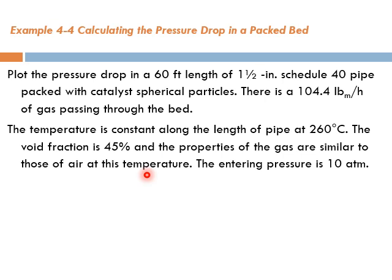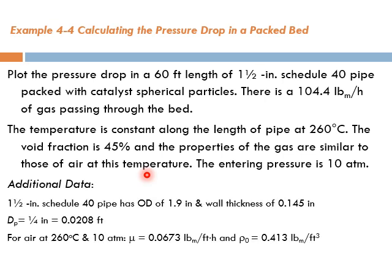The entering pressure is 10 atmospheres, so P₀ is 10 atmospheres. Additional information: 1.5-inch schedule 40 pipe has an outer diameter and wall thickness given, and dp is given, the particle size one-quarter inch.